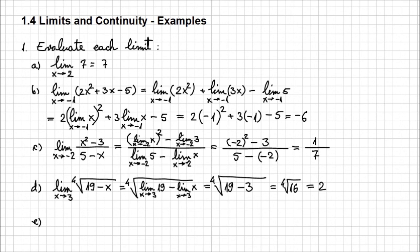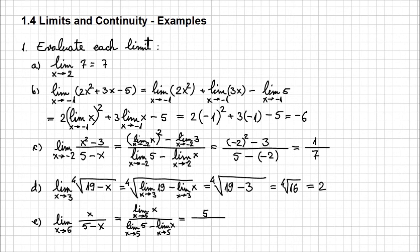Let's evaluate the limit when x approaches 5 of x over (5 minus x). The limit of a quotient is the quotient of the limits, and the denominator is a difference, so it becomes the difference of limits. In the numerator: limit of x as x approaches 5 is 5. In the denominator: limit of 5 minus limit of x as x approaches 5 gives 5 minus 5, which is 0. We cannot have 0 in the denominator, so this limit is undefined or does not exist. This is how you apply these properties to evaluate limits in algebraic form.